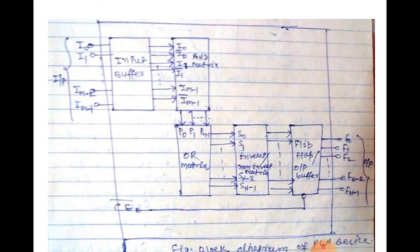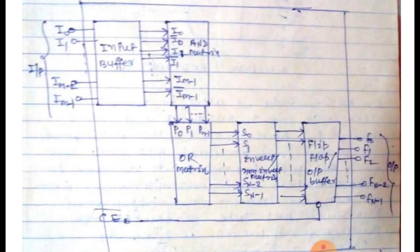After this connect the flip-flop, inverter and non-inverter circuit. This inverter and non-inverter circuit depends on sum is inverting and non-inverting. This inverting and non-inverting also connect to flip-flop output buffer. Flip-flop taken by SR flip-flops and gate Q outputs. Q outputs as F0, F1, F2 to FN minus 1. This is the basic block diagram.